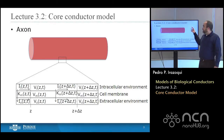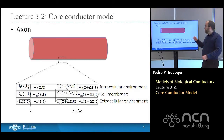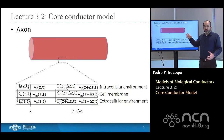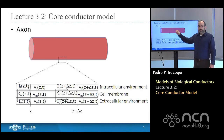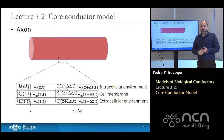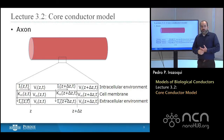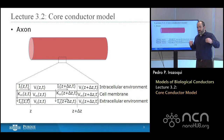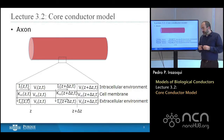An axon looks like a long cylindrical object, and it resembles any long cylindrical object. In fact, the core conductor model was initially developed to discuss transatlantic phone cables and long cables that had to carry electrical signals over a long physical dimension.